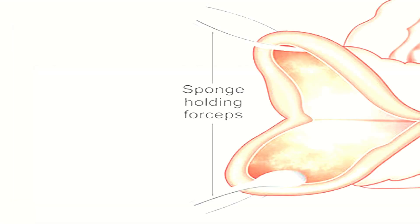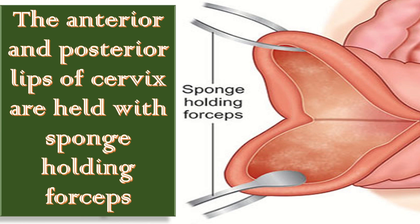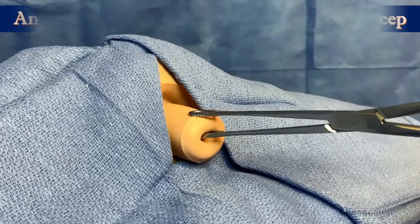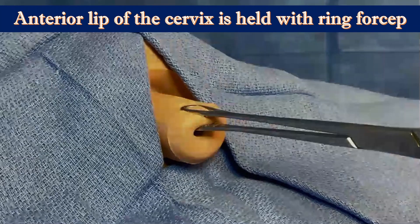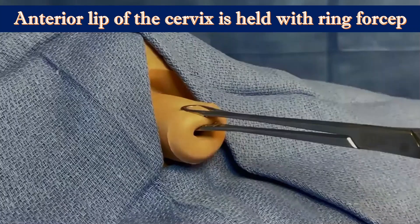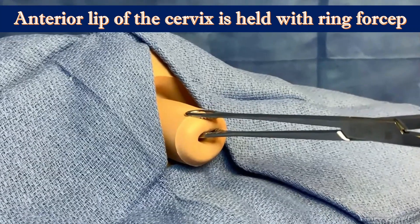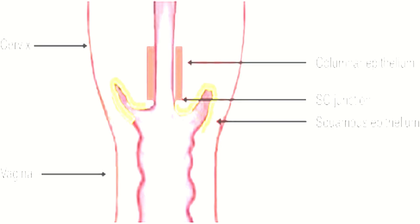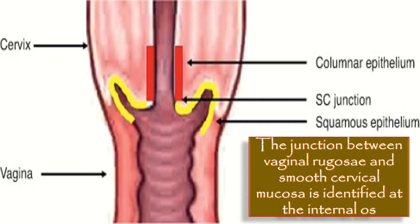The cervix is visualized using a Sims speculum. The anterior and posterior lips of the cervix are held with a sponge holding forcep and downward traction is applied. In this model, the anterior lip of the cervix is held with a ring forcep. The junction between vaginal rugose and smooth cervical mucosa is identified at the internal os.